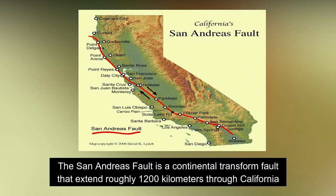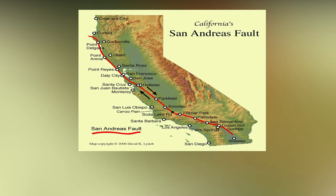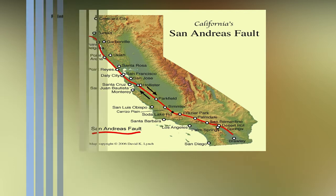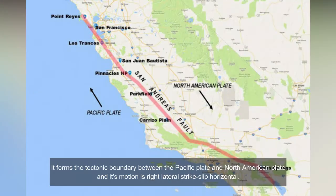The San Andreas Fault is a continental transform fault that extends roughly 1,200 kilometers through California. It forms the tectonic boundary between the Pacific Plate and the North American Plate, and its motion is right-lateral, strike-slip, horizontal.